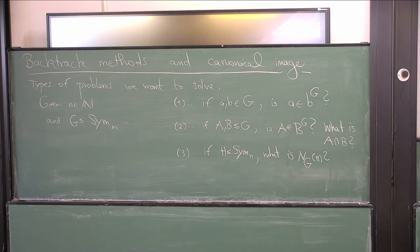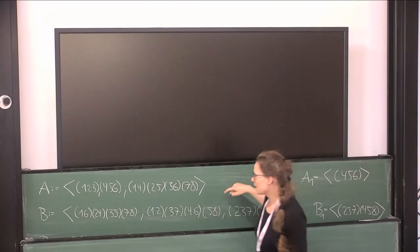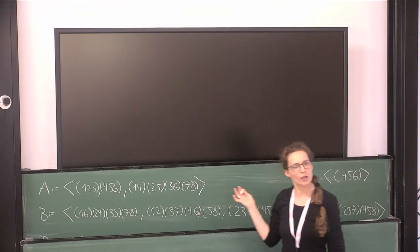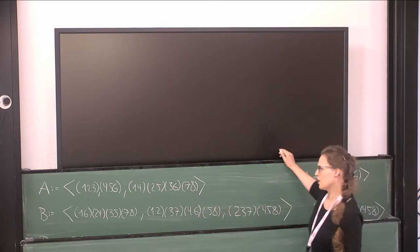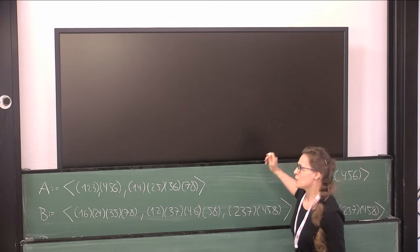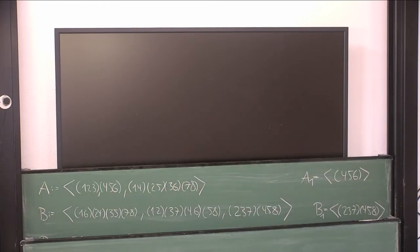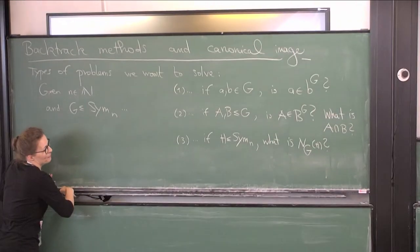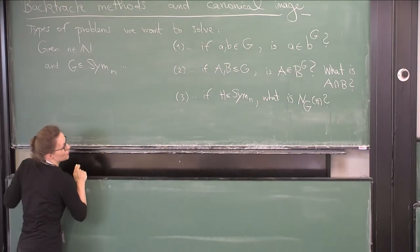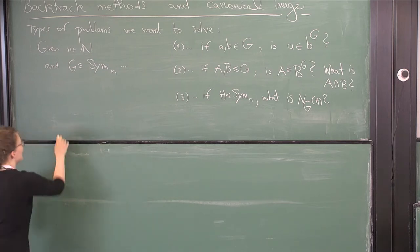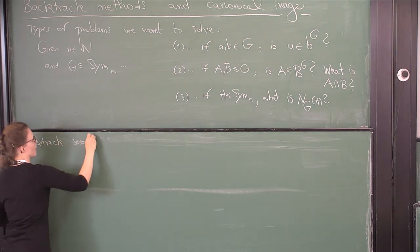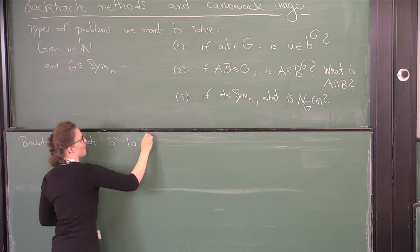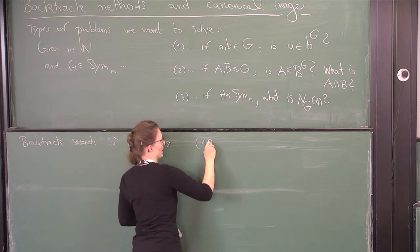So we have subgroup A here. Do we see anything interesting? Orbits maybe — that could be interesting. And then there's subgroup B, which looks very transitive on 1 to 8. This approach goes back to 1971 and is based on having a base and a special generating set in the stabilizer chain.